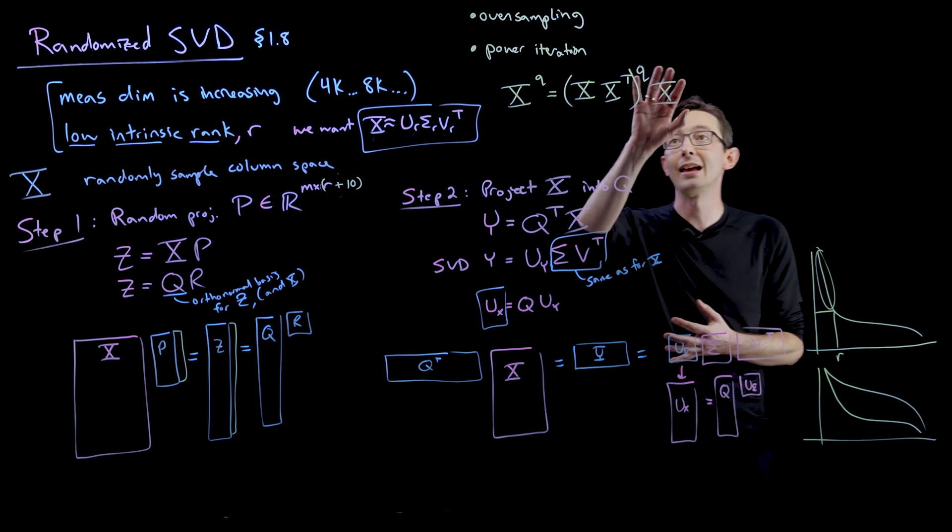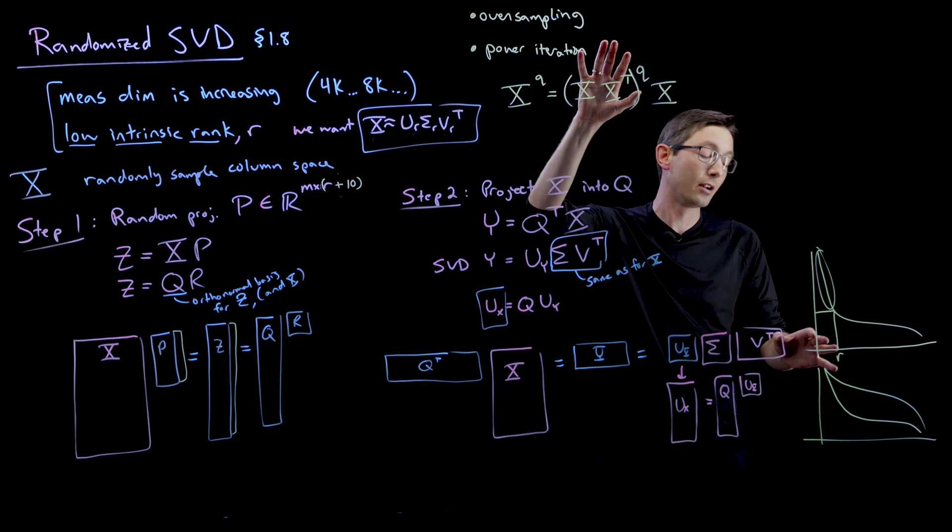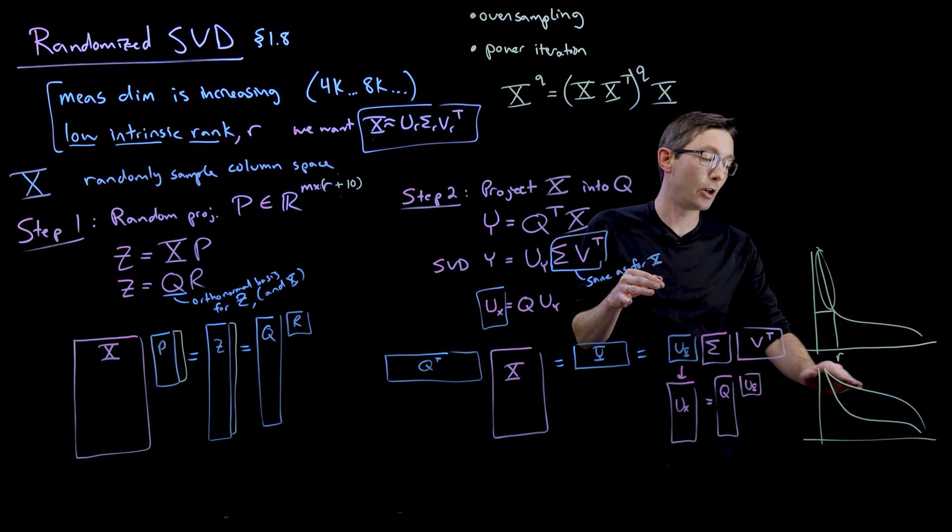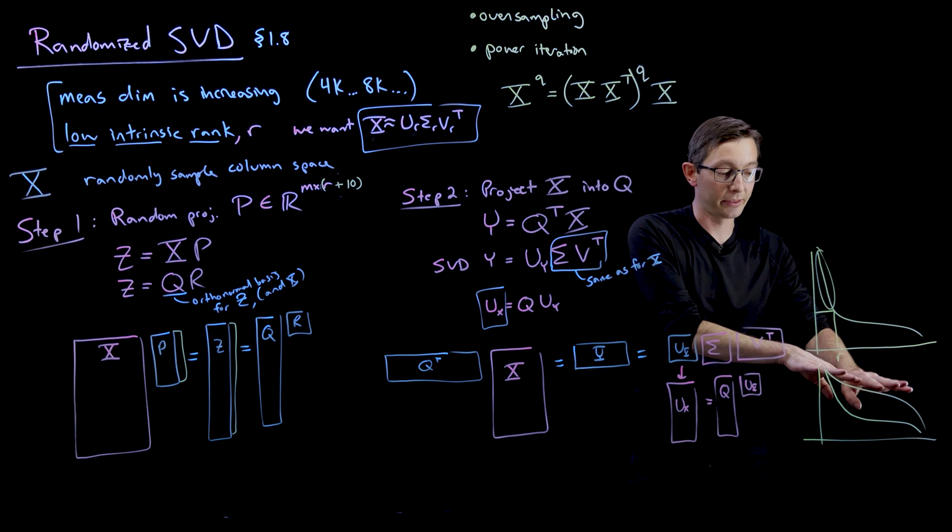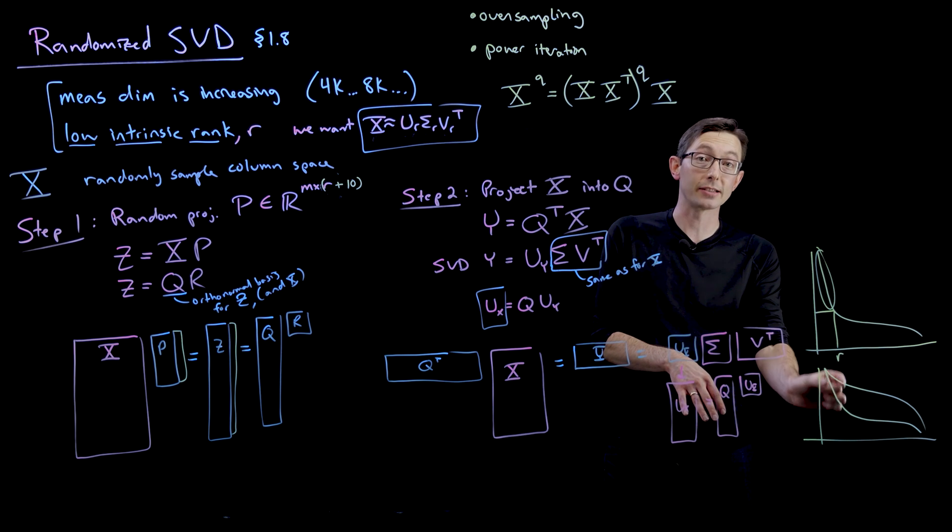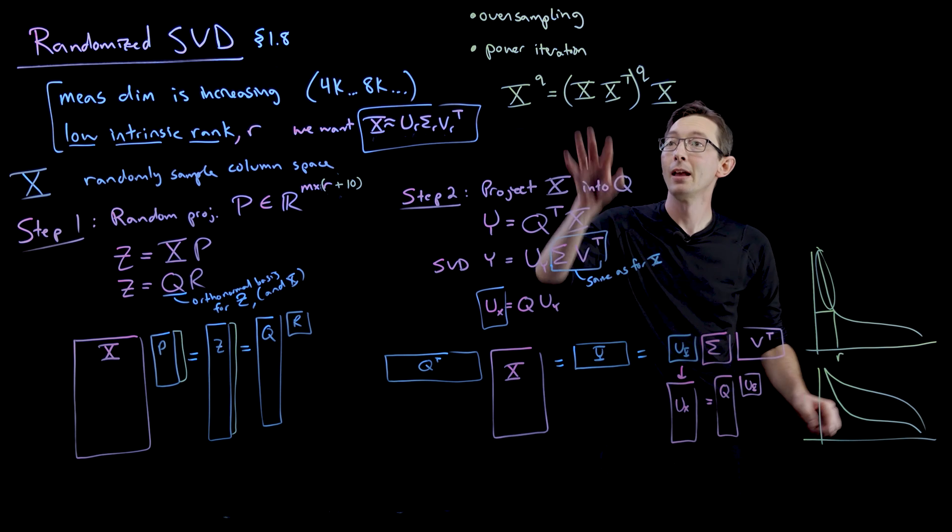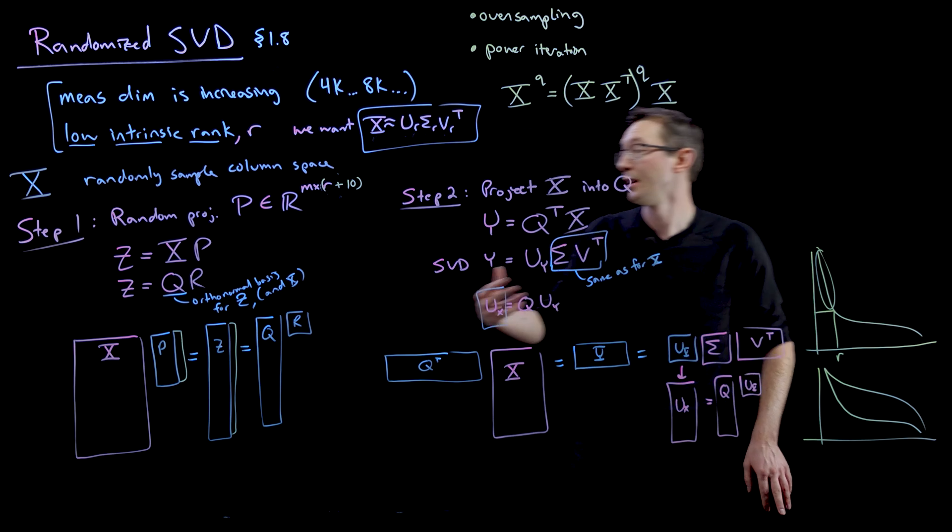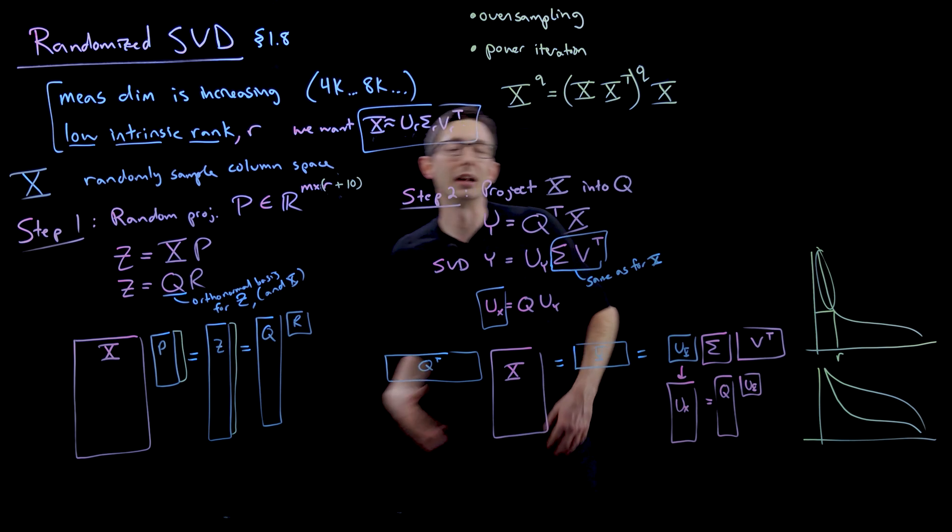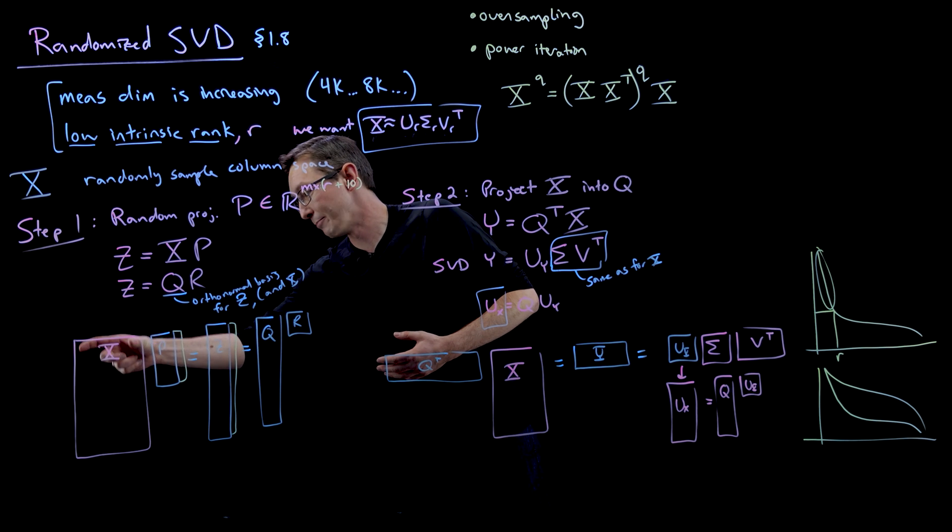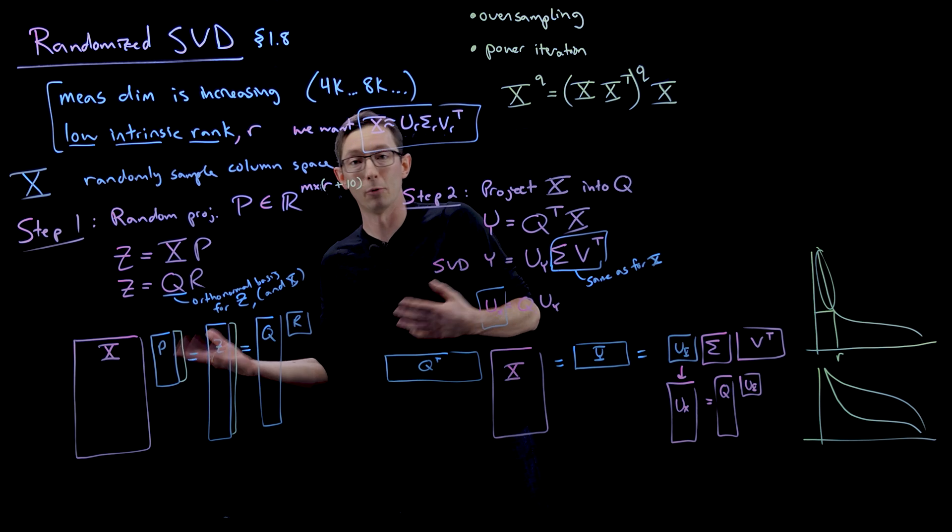But it also gives much better performance if you have slower decay in your singular values and you want them to look like they decay faster. So if you really want to capture the first r singular values and they don't decay that rapidly, you're going to need to do power iteration, even though it comes with this extra cost of more passes through your data. And of course passes through your data is very expensive because who wants to multiply a billion by million matrix more times than you need to.